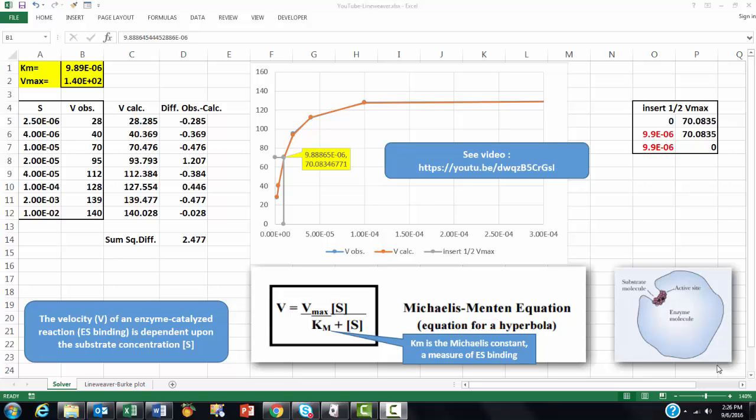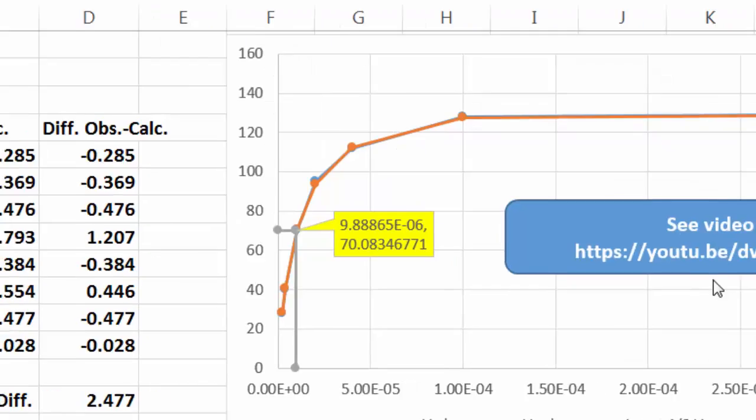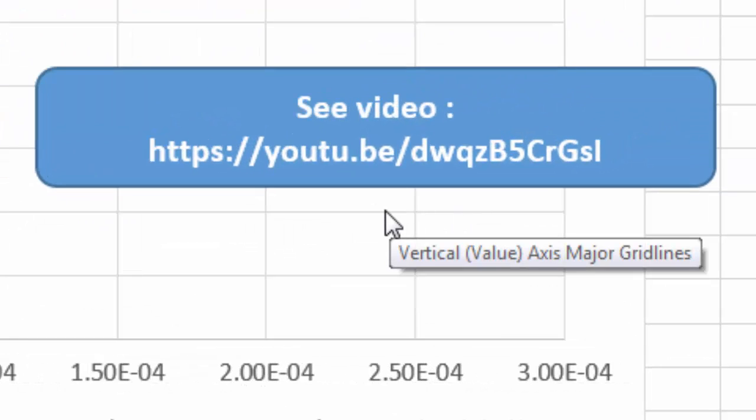In a previous video I showed how you can use the Michaelis-Menten equation to find out for your observations at certain substrates and certain velocities what the Michaelis constant is, what the max velocity is, and also what the half max velocity would be. I did that on this video and I won't explain again how I did it, but I used Solver as a tool.